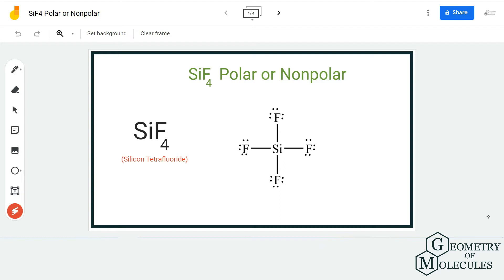To start with, we are first going to look at its Lewis structure. Here, as you can see, silicon is in the center and it is forming four bonds with four fluorine atoms. All the electrons are used up by fluorine atoms to complete their octet.